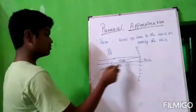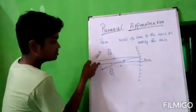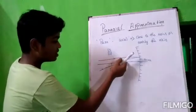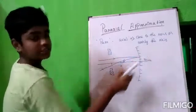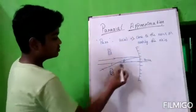Rays that go close to the axis will make small angles with the principal axis. This is called paraxial approximation.